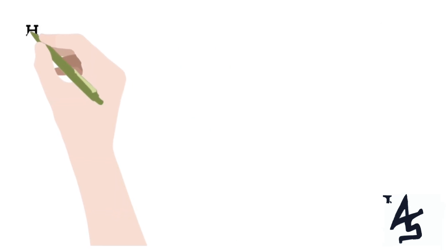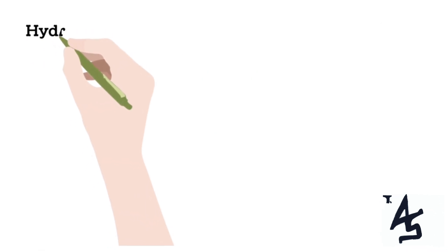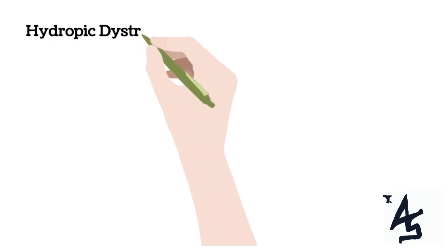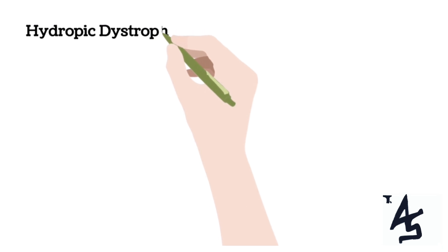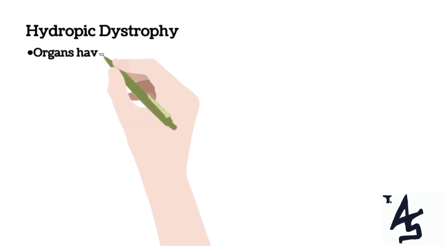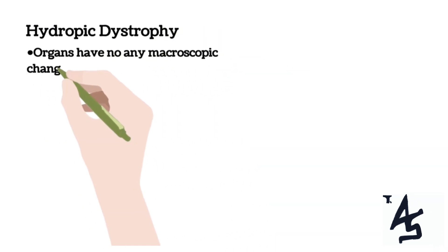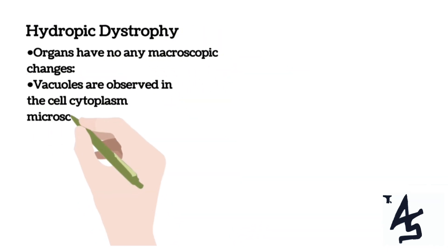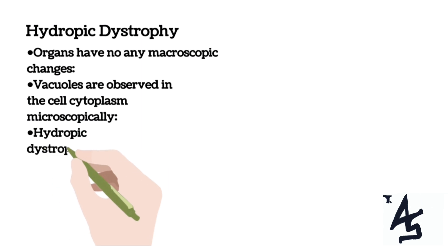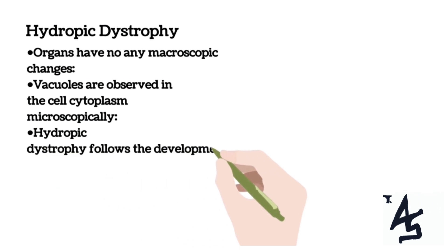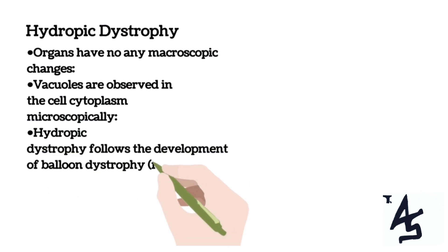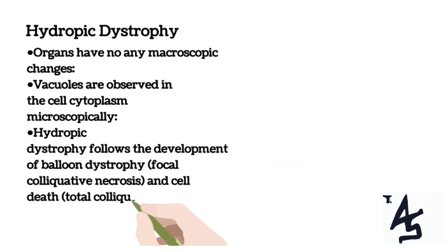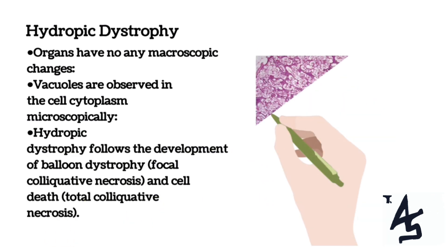Now let's move on to hydropic dystrophy. Here no macroscopic changes are visible in organs — so gross anatomically they are intact. But when viewed microscopically, vacuoles are observed in the cell cytoplasm. Hydropic dystrophy follows the development of balloon dystrophy and cell death.